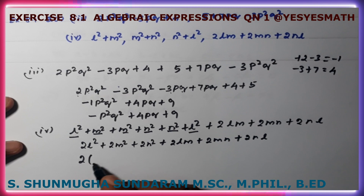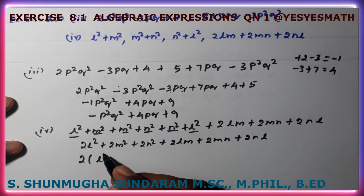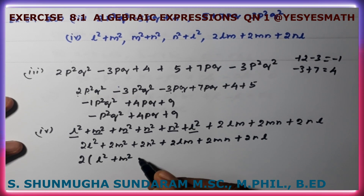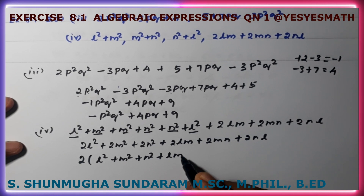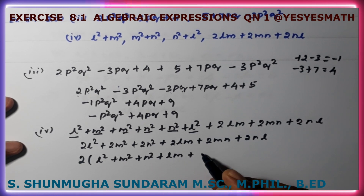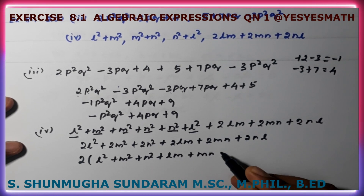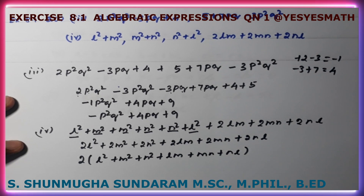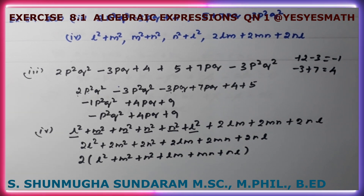Taking 2 as common: 2 times open bracket L squared plus M squared plus N squared plus LM plus MN plus NL close bracket. That is the answer for the 1st and 2nd sums.